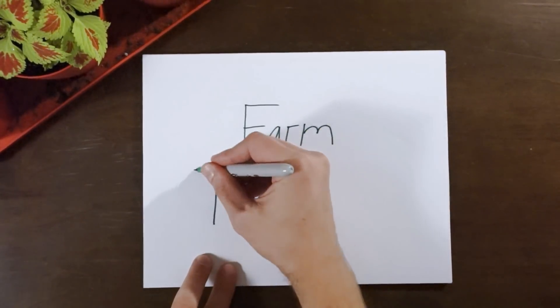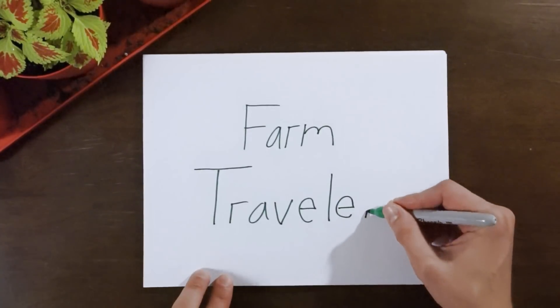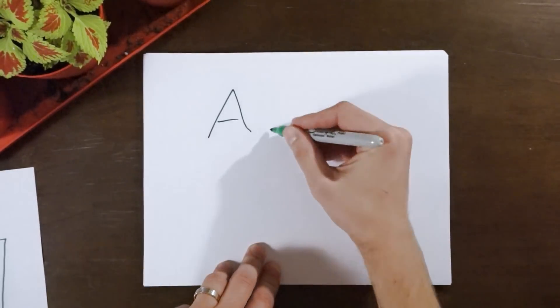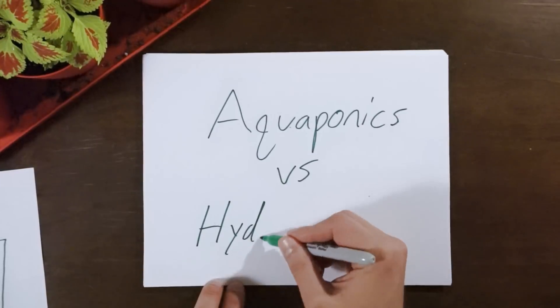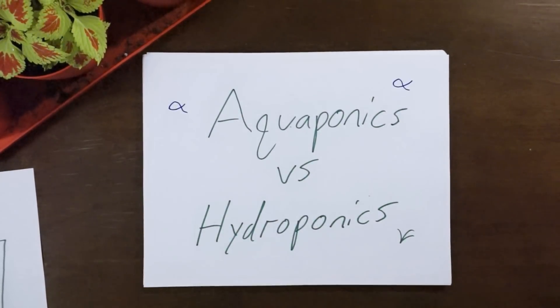Hello and welcome to Farm Traveler. We're actually not at a farm this week, just my coffee table, but there's a plant so that still kind of counts. Today we're going to talk about aquaponics versus hydroponics and how they relate to aquaculture. But first, there's a plant and two little fish.